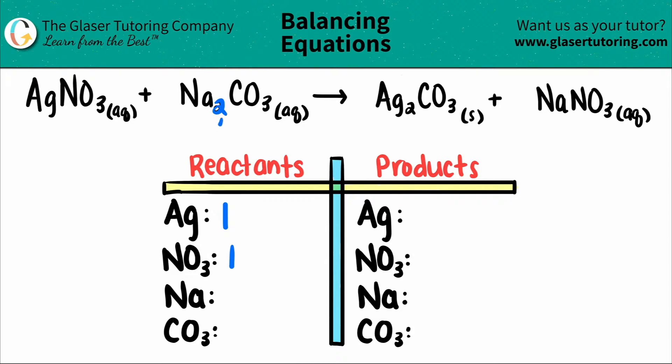I have a two over here, which tells me that I have two sodiums, two Na's. And then the same thing for the polyatomic carbonate, CO3. The three is included in the polyatomic. I don't see any parentheses, which means that there is just one carbonate.